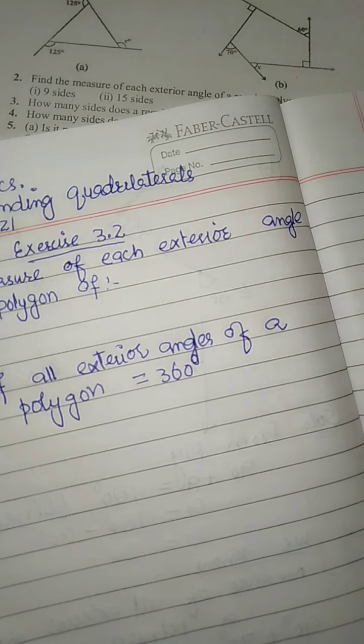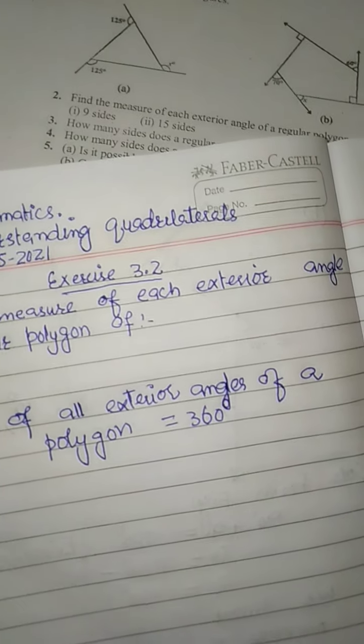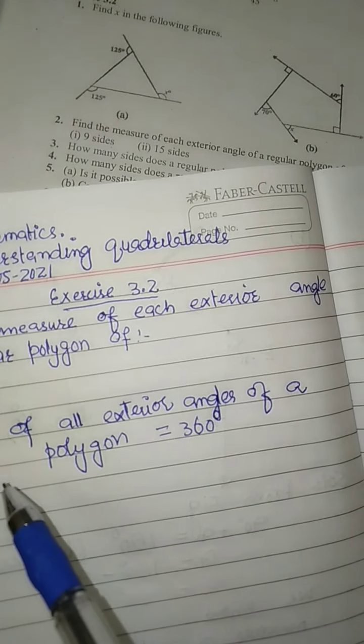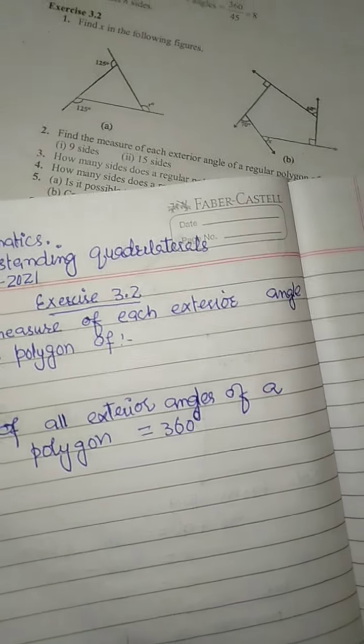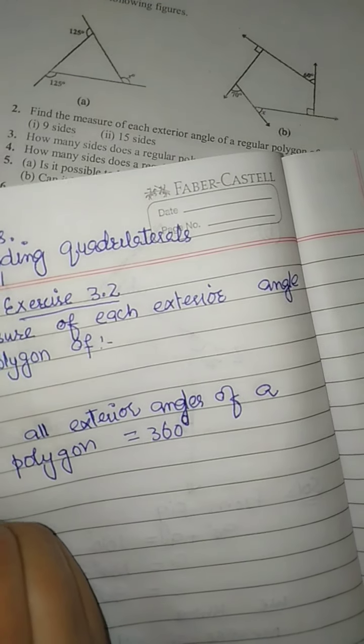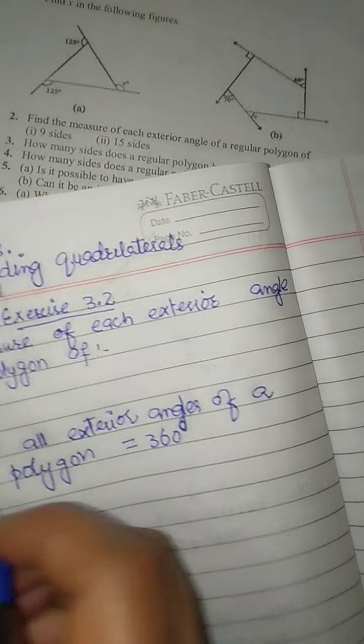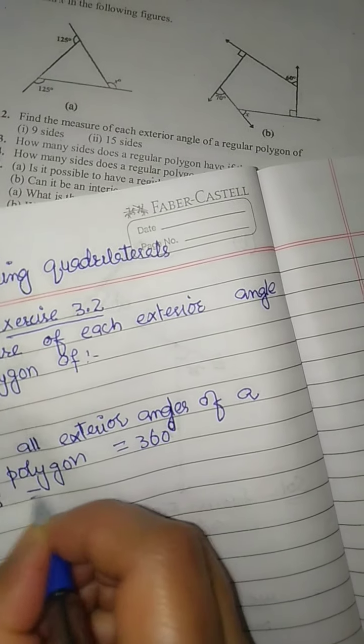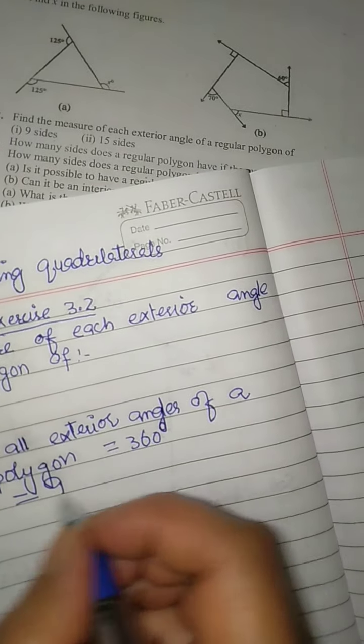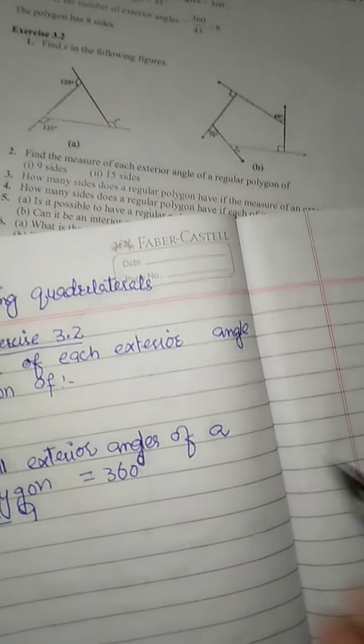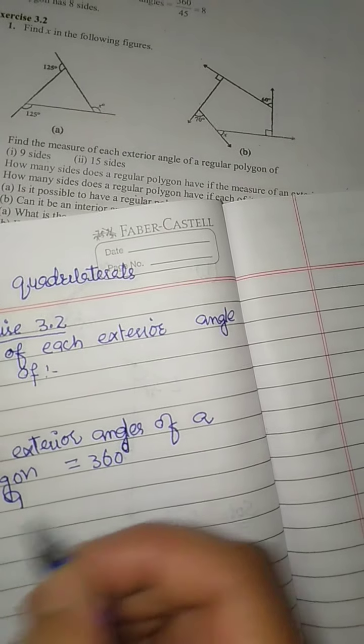Since it's a regular polygon, this means all sides and all angles are equal. The number of sides is 9. This means however many sides there are, there will be the same number of angles. So the number of sides equals the number of angles.